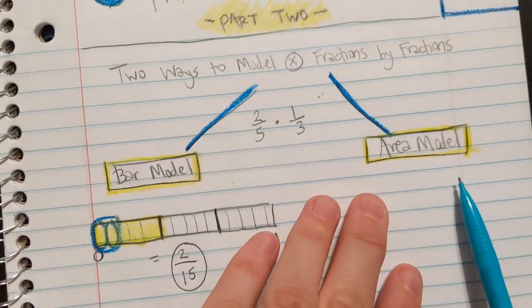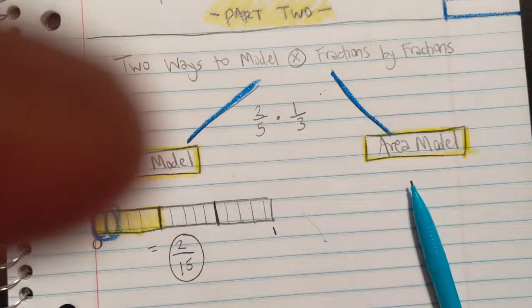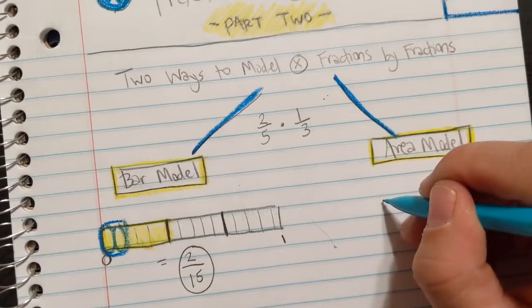Two fifteenths. Now I'm going to show that exact same one, only doing it in the area model. Okay? Think about what you have to do with that problem in order to do the area model. I love it. Remember the very first thing that you're going to do is draw a whole box. Okay? So I draw one whole box. Looks like this.